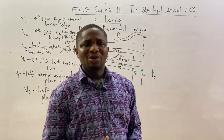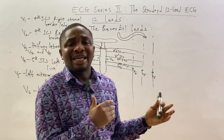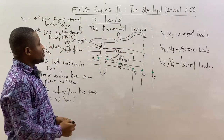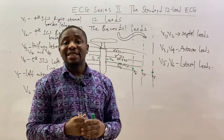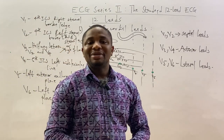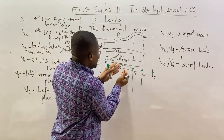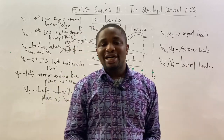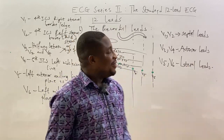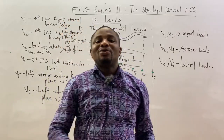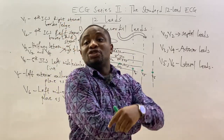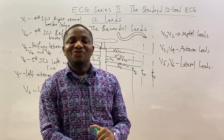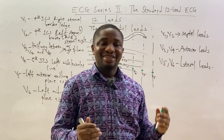Now, which aspect of the heart does each precordial lead look at? V1 and V2 are close to the septum — they are called the septal leads. V3 and V4 are on the anterior aspect of the heart — they are the anterior leads. V5 and V6 extend into the axilla, so they look to the side — they are the lateral leads.